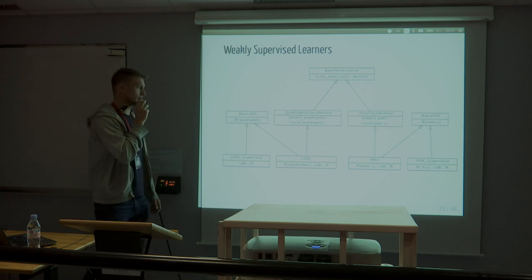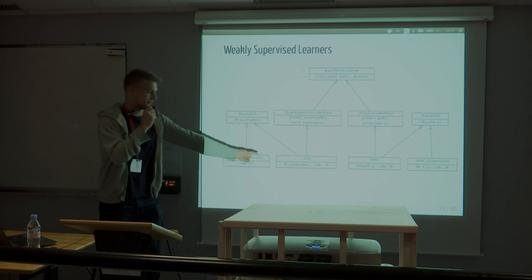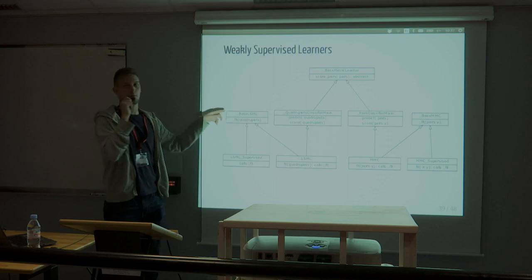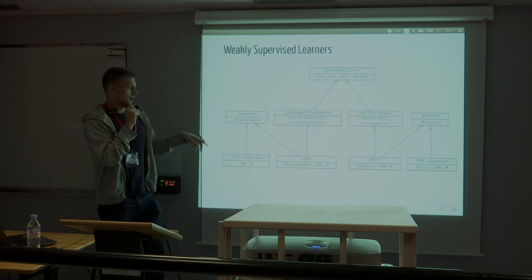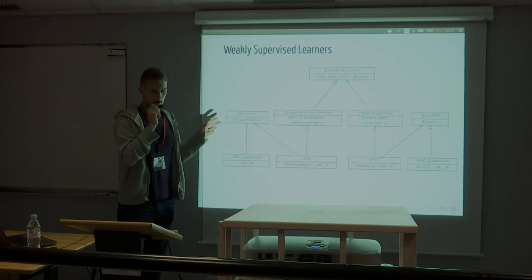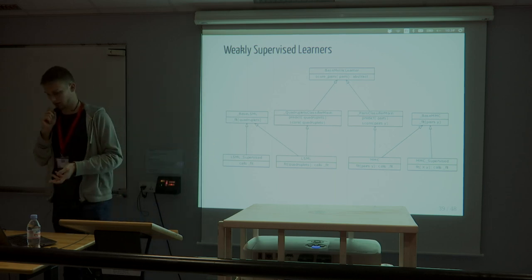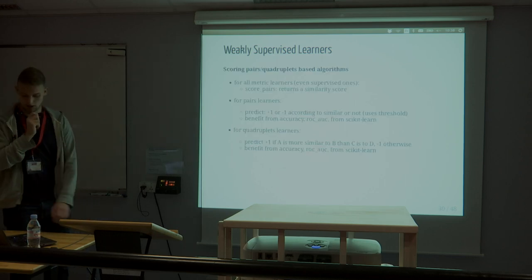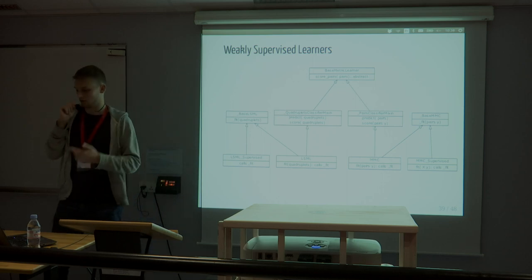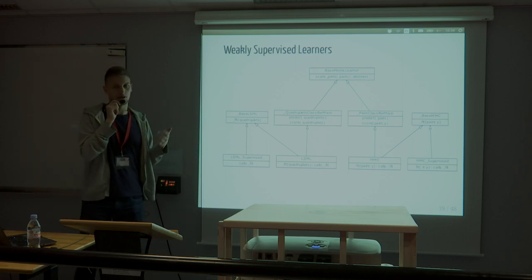Here is a sub-diagram of the weakly supervised learners. Every weakly supervised algorithm has a supervised version, and they both inherit from a base class. Each weakly supervised method inherits from a mixin for pairs or a mixin for quadruplets, which in turn inherit from a base class for metric learners. The predict and score functions are defined at the meta level so it will be the same way you score every pair classifier.